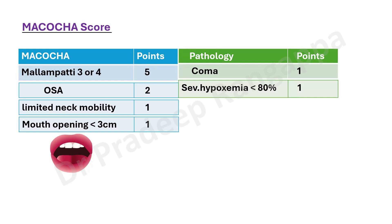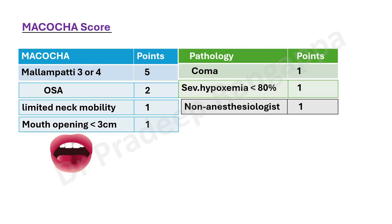ICU patients are not in a physiological OT setting — they will be hypoxemic, have secretions, and may be comatose. Coma gets 1 point; hypoxemia with saturation less than 80% on room air gets 1 point; and a non-anesthesiologist operator also gets 1 point. The total MACOCHA score is 12. A score greater than 3 means you should take all necessary steps and prepare backup plans before intubating.